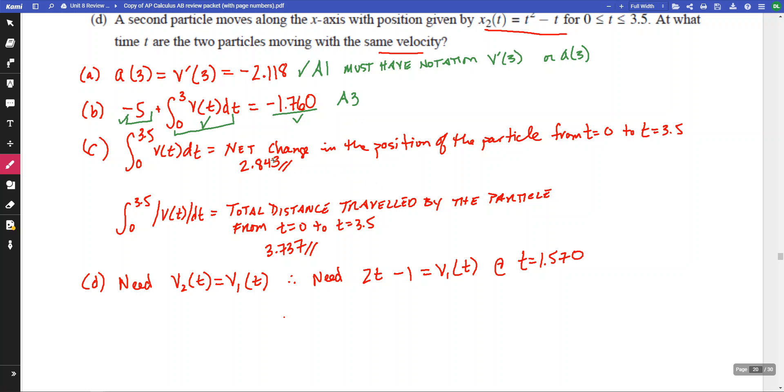For part C, the net change in position from 0 to 3.5, that's one mark. The total distance traveled on the interval, that's one mark. And then the correct answer is only one mark, as long as they're both correct. So there's only three marks on part C. And the correct answers represent only one of the three marks. And if you don't give what the net change, or what the total distance is, over the time interval, then you cannot get credit.